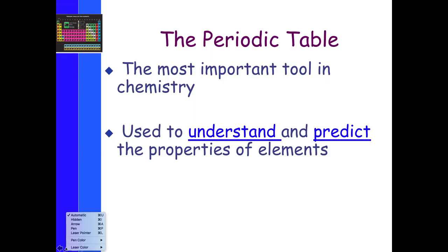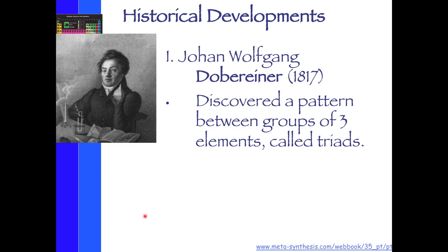So anyways, we'll keep moving and take a look at the periodic table. It's the most important tool that we use in chemistry, if you haven't figured it out. And we can understand and predict properties of elements using this. So the video was mostly about Mendeleev. But before Mendeleev, there were some historical developments going on.